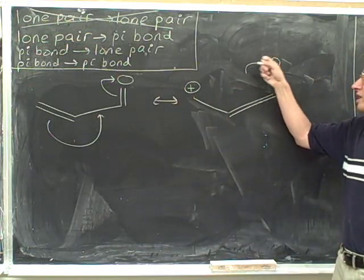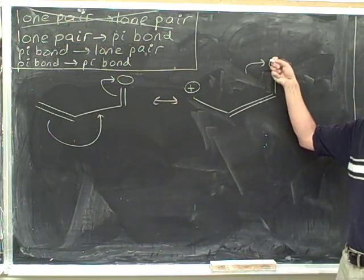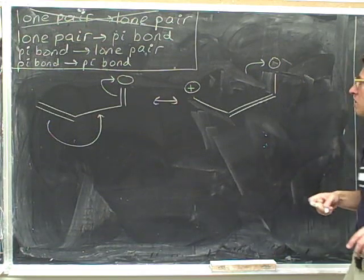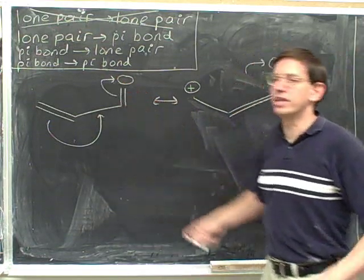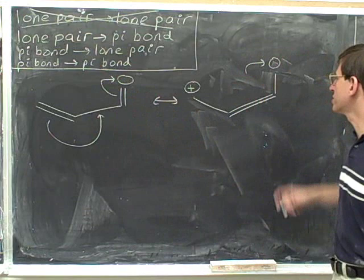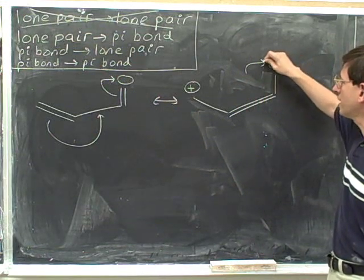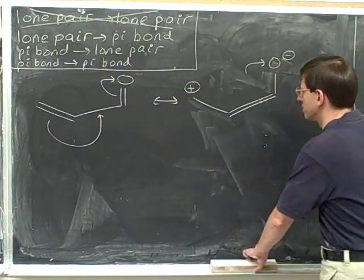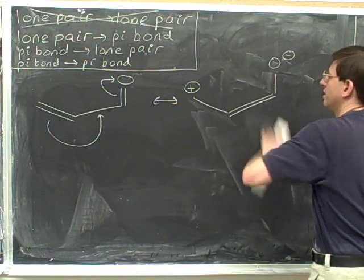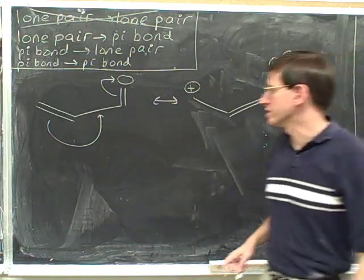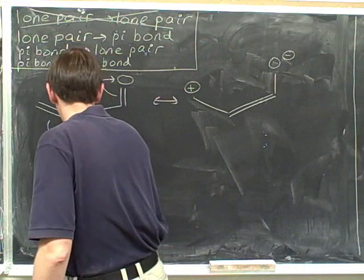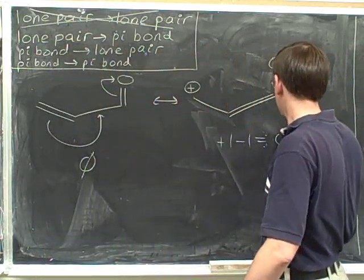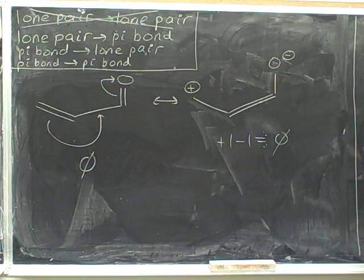Now we look at the final head — it's pointing at the atom, so we're forming a new lone pair. We don't need to draw the lone pair, but since we're at the final head, we need to change a charge. This oxygen started neutral and it's gaining electrons, so it ends up with a negative charge. Now we erase that head. We always check the net charges — here we have a plus charge and a negative charge, so we have a zero formal charge overall.